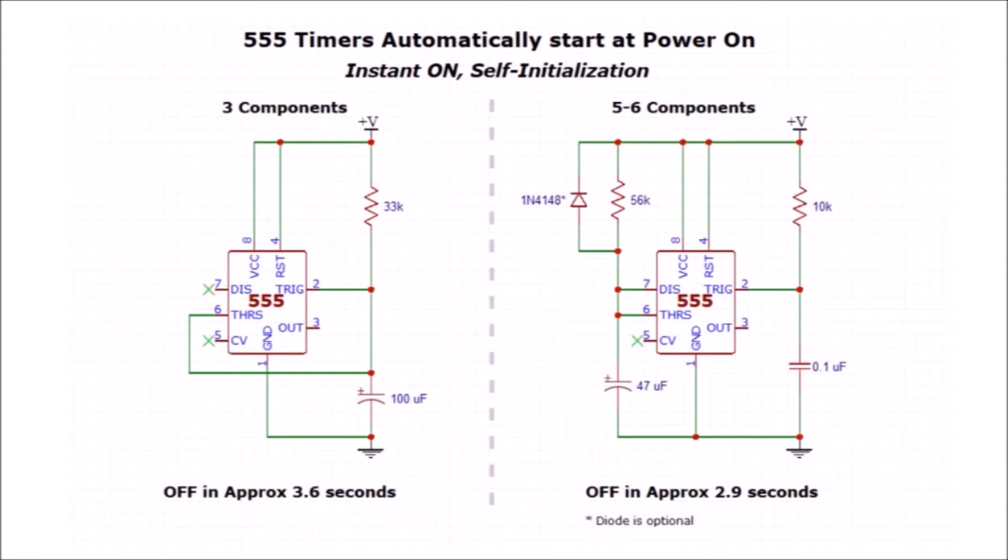A single 555 timer, one resistor, one capacitor. On the right hand side we've got a little more sophisticated circuit. It has at least five components, two resistors, two capacitors, a timer, and an optional diode.